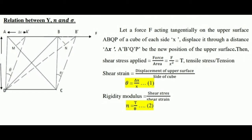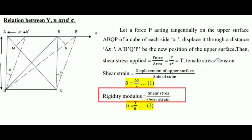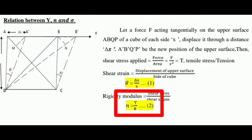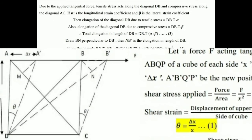Shearing strain equals displacement of the upper surface divided by the side of the cube. As derived previously, theta equals delta x divided by x, taken as equation 1. Rigidity modulus equals shear stress divided by shear strain. Substituting the equations for shear stress and shear strain, we get n equals t divided by theta, taken as equation 2.